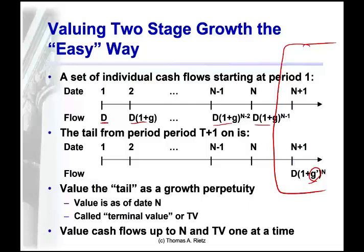As long as the terminal growth rate is less than the required return, you can value the dividends from the end of the forecast period on forever as a growth perpetuity by dividing by return minus growth. The growth perpetuity formula discounts one period automatically, so using it gets you the value at the end of the forecast period. This is called either the terminal value or the continuing value, because it represents the value of the company continuing past the forecast period in all those future dividends.